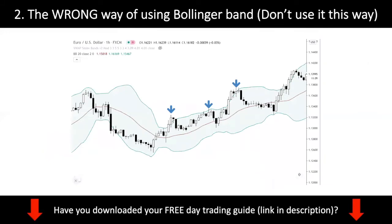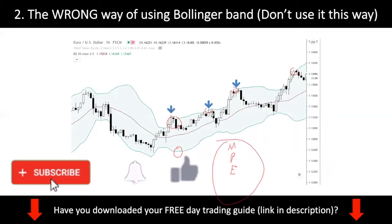Let's move on to a mistake I see a lot of new traders make — using the Bollinger Band in the wrong way. A lot of new traders, when they first start off, they just sell every time price touches the upper band and buy every time it touches the lower band. Then they lose a lot of money and get upset. Please do not do that. Trading is not that simple. In our day trading guide, we teach the MPE strategy: M stands for market condition, P stands for price level, and E stands for entry. You want to integrate the Bollinger Band into this process — don't blindly short or long at every single level.